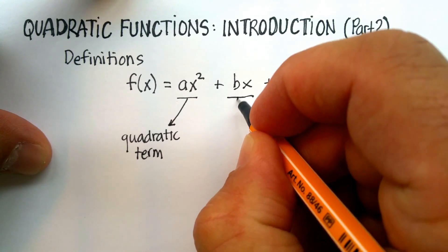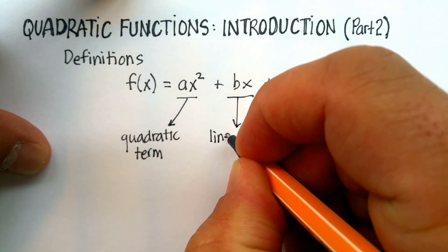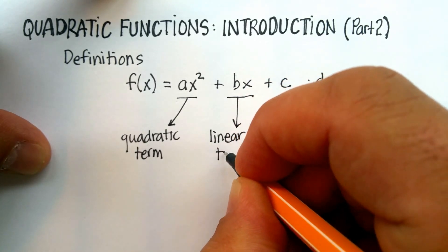This particular term, where the degree is one, is called the linear term. Now, let me show you something.